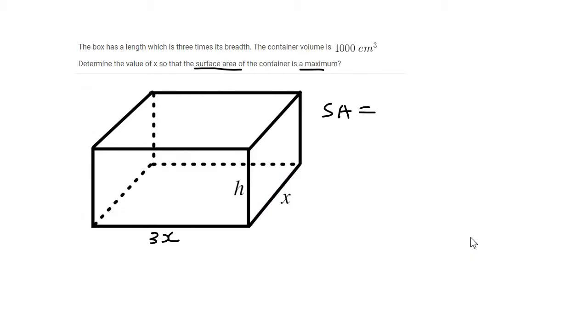So now surface area, for example, is all the stuff on the outside. So you could take this surface over here, for example, which would be h times x, which is like its own length times breadth. And then there would be two of those, right? Because there would be this one at the back over there. And so we'll say h times x times 2.